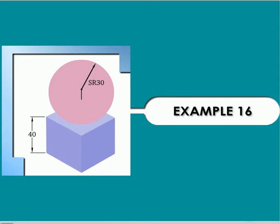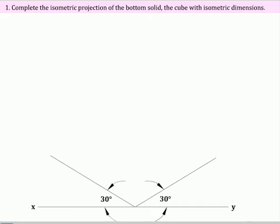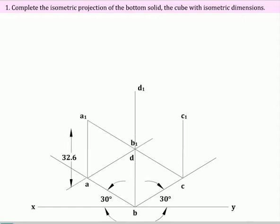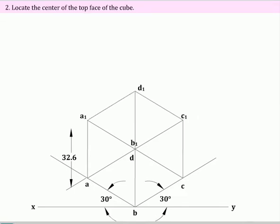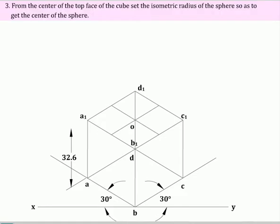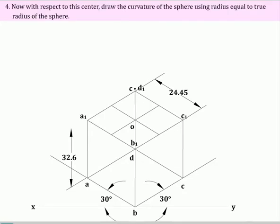Example problem: Complete the isometric projection of the bottom solid, the cube, with isometric dimensions. Locate the center of the top face of the cube. From the center of the top face of the cube, set the isometric radius of the sphere so as to get the center of the sphere.